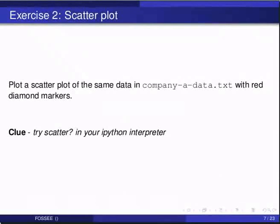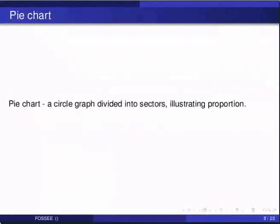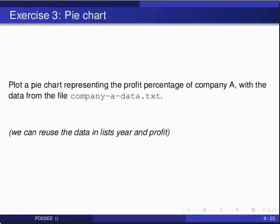Now let us see another kind of plot — the pie chart for the same data. A pie chart or a circle graph is a circular chart divided into sectors illustrating proportion. Plot a pie chart representing the profit percentage of company A with the same data from the file 'company-a-data.txt'.